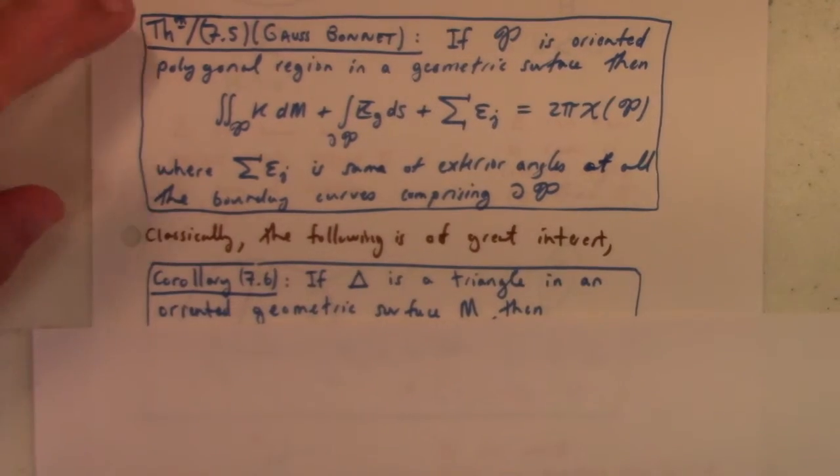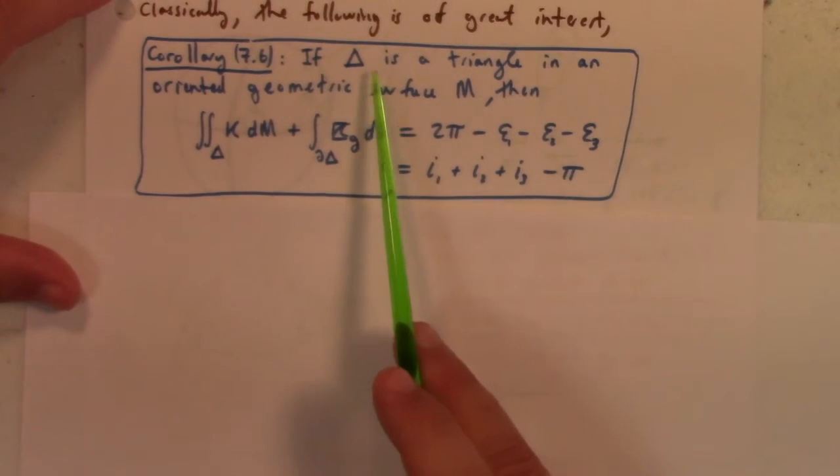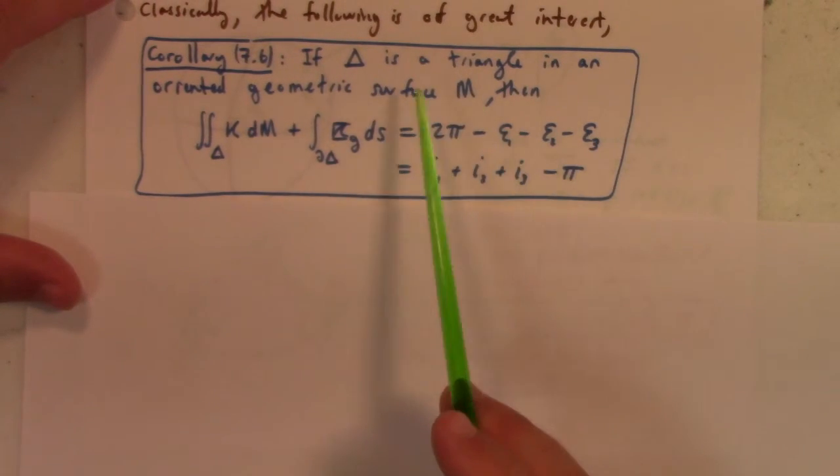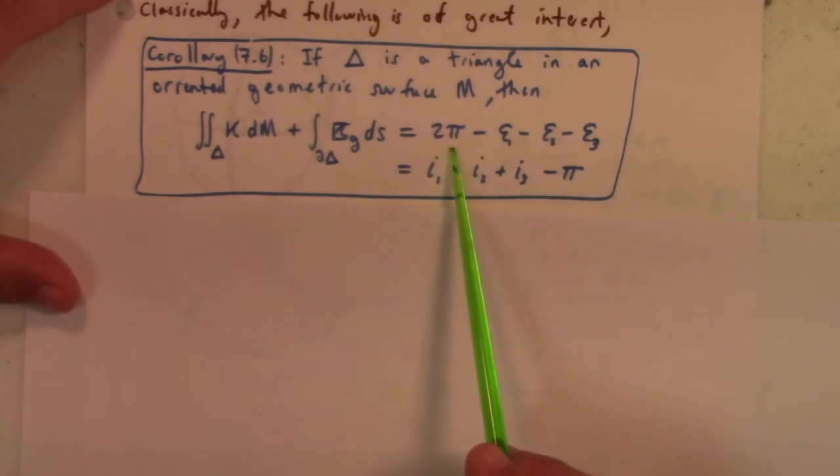If that's a triangle in an oriented geometric surface M, then the total Gaussian curvature of the triangle plus the integral over the boundary of the triangle of the geodesic curvature equals 2π minus the exterior angles, or as is more fun to say, it's equal to the sum of the interior angles minus π.